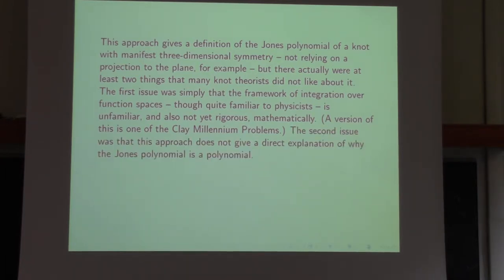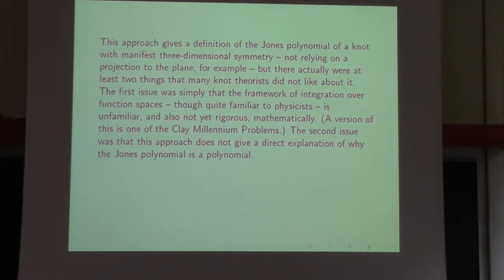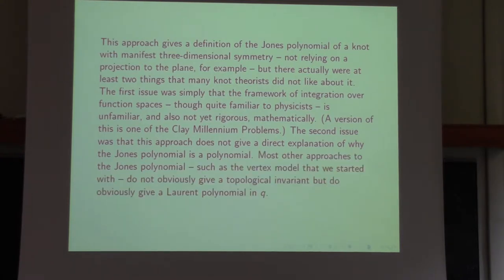The second thing that caused many mathematicians to not like this approach is that it does not give a direct explanation of why the Jones polynomial is a polynomial. The Jones polynomial is a Laurent polynomial in a complex variable Q. Here we get an evaluation of the Jones polynomial at many values, which determines it, but doesn't give a direct explanation of why it's a polynomial. More or less all other approaches to the Jones polynomial do not obviously give the topological invariant but do obviously give a Laurent polynomial.